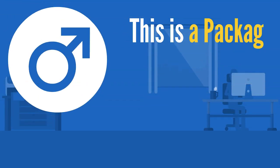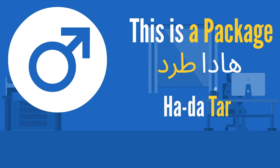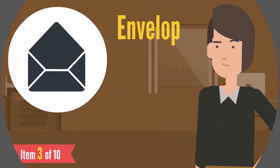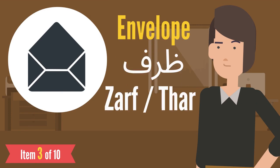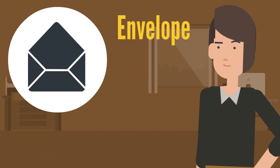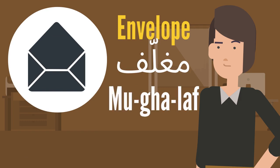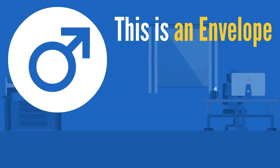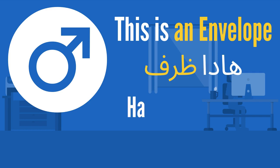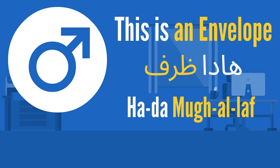Our next term is package — طرد. When we say 'this is a package,' this is an envelope. Next is envelope — we can either say ظرف or ظرف. And another way to say envelope is مغلف — that's mostly in the MSA dialect. When we say 'this is an envelope': هذا ظرف, or we can say هذا مغلف.